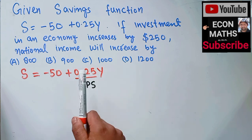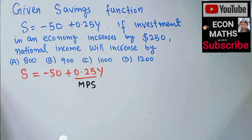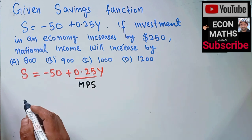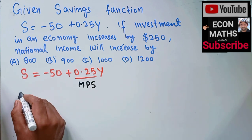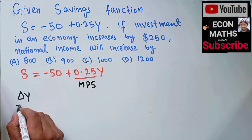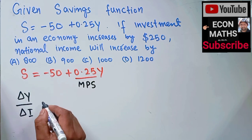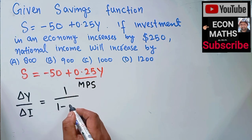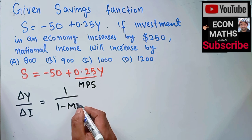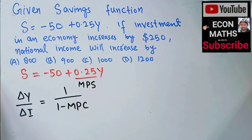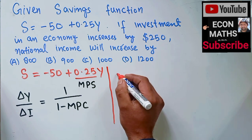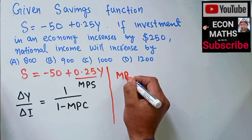To find out the change in income due to the change in investment by $250, we use the multiplier. The investment multiplier is given by: change in income divided by change in investment, which equals 1 divided by (1 minus the marginal propensity to consume).